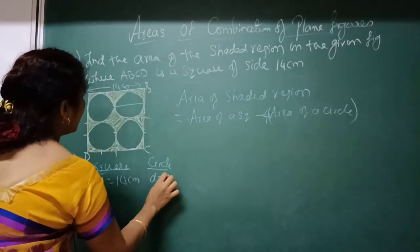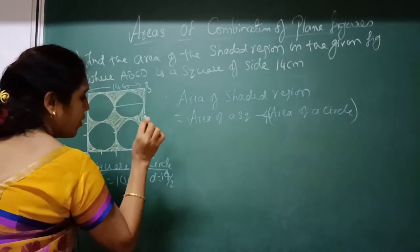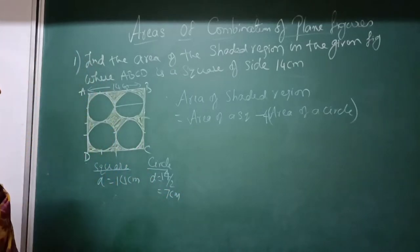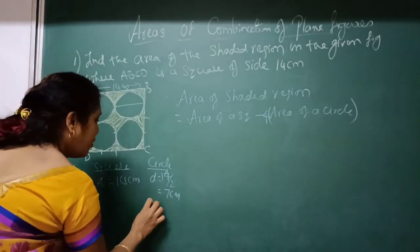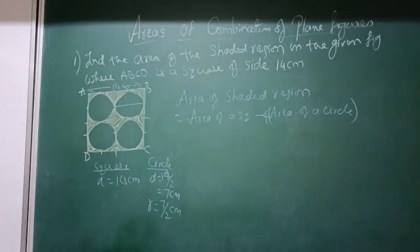14 by 2 which is equal to 7 cm. And what will be your radius? Radius will be equal to 7 by 2 cm.